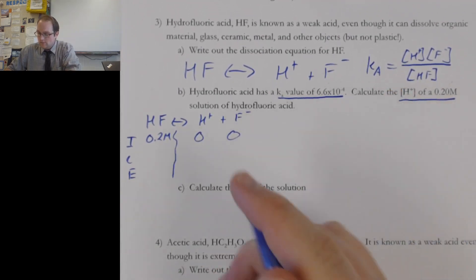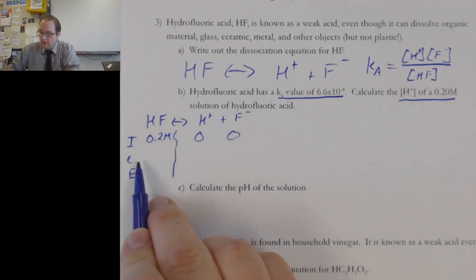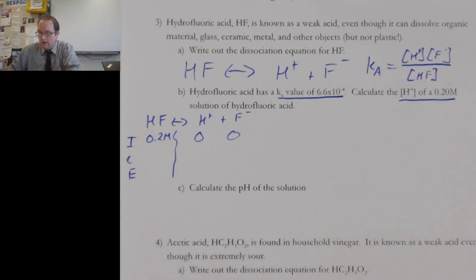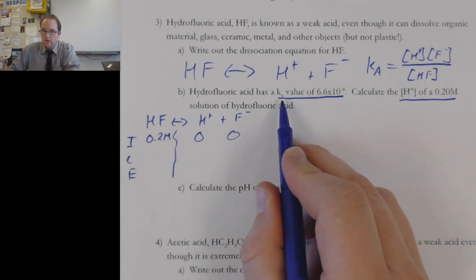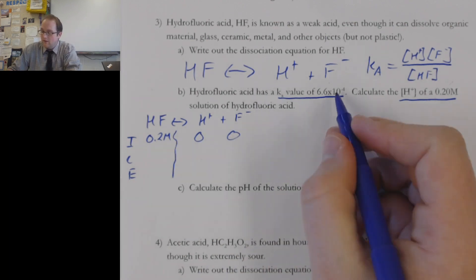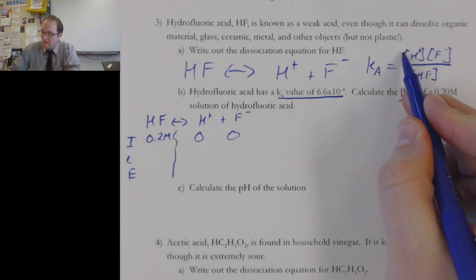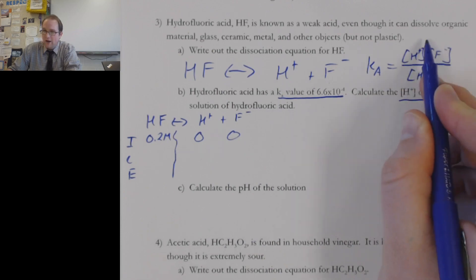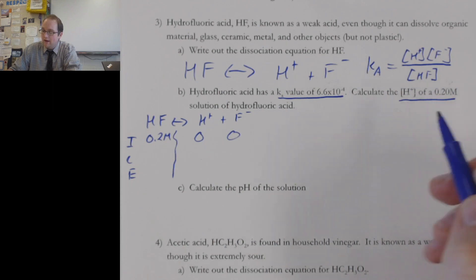But from this point is where we diverge from our other KEQ problems. Because if you notice, this Ka value is very, very tiny in comparison to some of our other KEQ values we've looked at. Normally, sometimes they can be upwards of several hundreds or thousands. What this means, of course, is that you have very, very little product being created. Very little H plus and F minus.